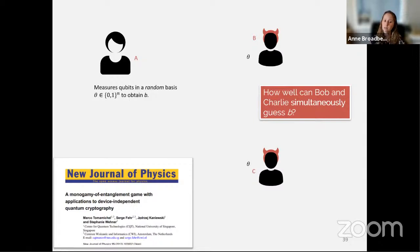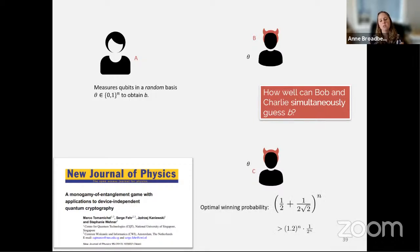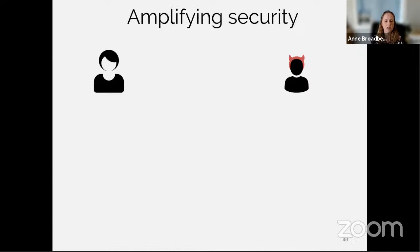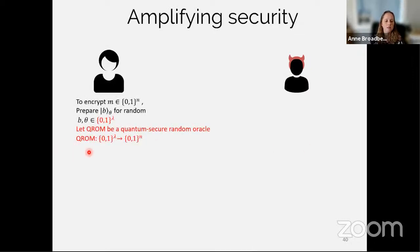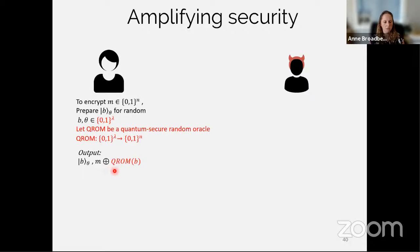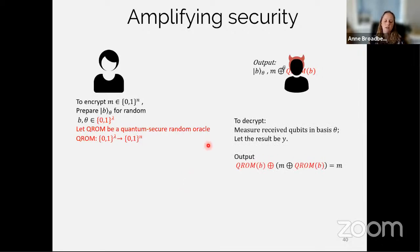We also look at the entanglement-based version: the adversary creates a tripartite state rho_ABC, sends register A to Alice, B to Bob, and C to Charlie. Alice measures the qubit in a random basis to get bit string b, then theta is revealed. The question is how well can Bob and Charlie simultaneously guess b. Fortunately this setting is exactly the one considered in the paper 'A Monogamy-of-Entanglement Game with Applications to Device-Independent Quantum Cryptography' by Tomamichel, Fehr, Kaniewski, and Wehner, who give a bound on the winning probability of one-half plus one over 2^(n/2).